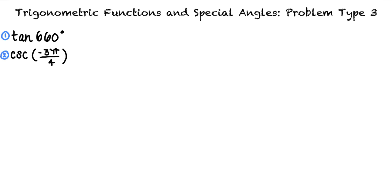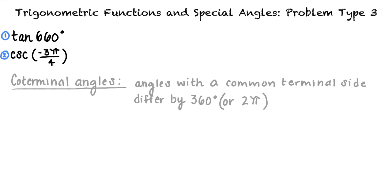First, we will find a coterminal angle for negative 3 pi over 4. Remembering that coterminal angles share a terminal side and differ by a multiple of 2 pi, or 360 degrees, we know that this is 5 pi over 4.